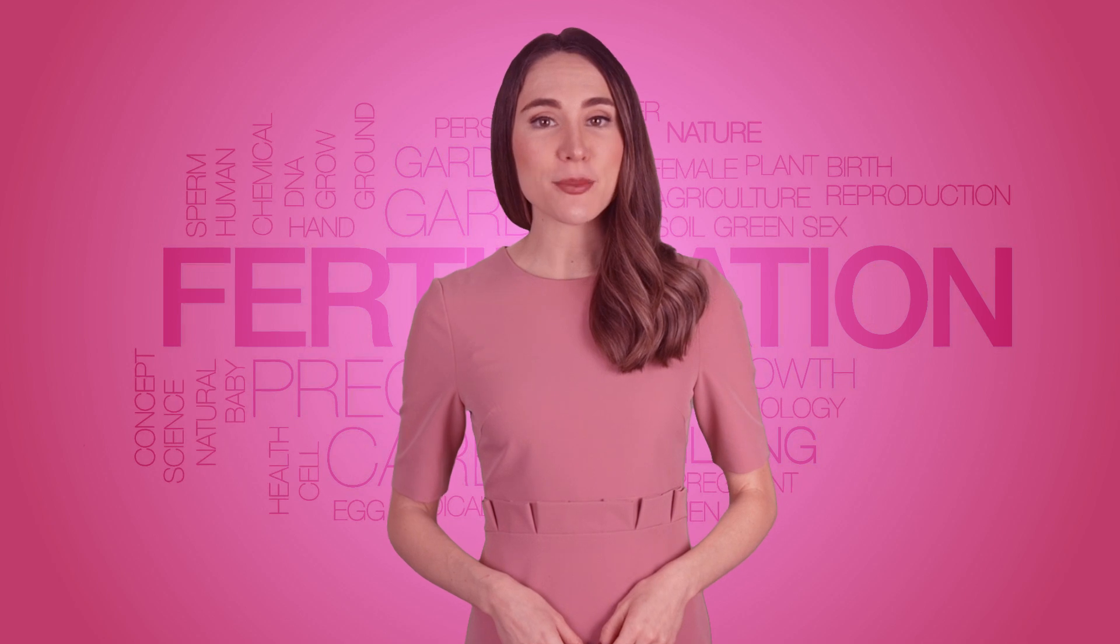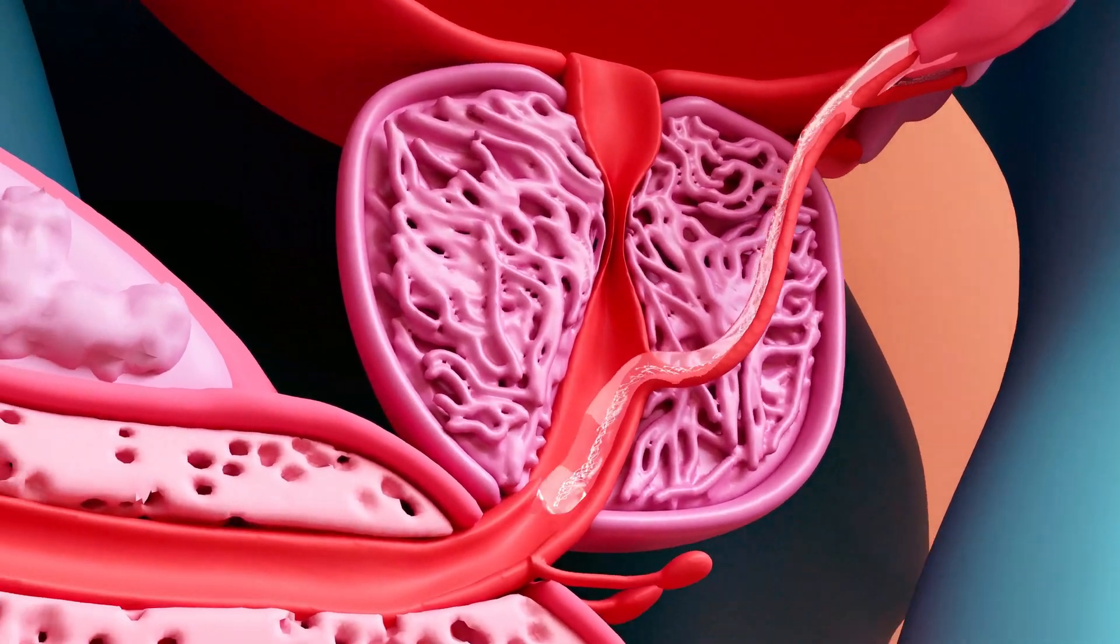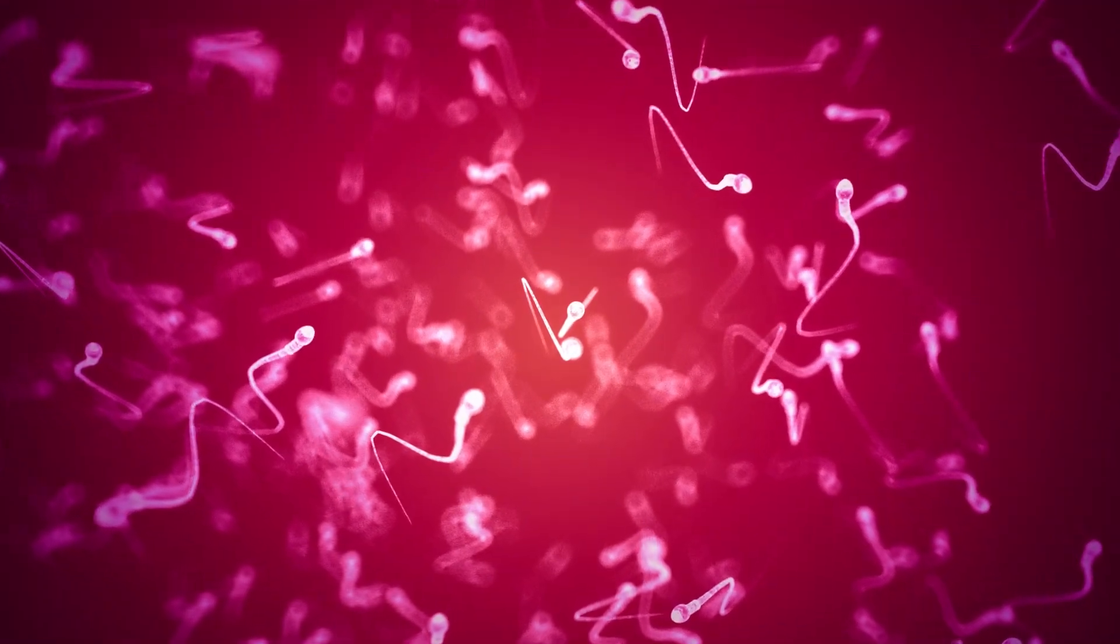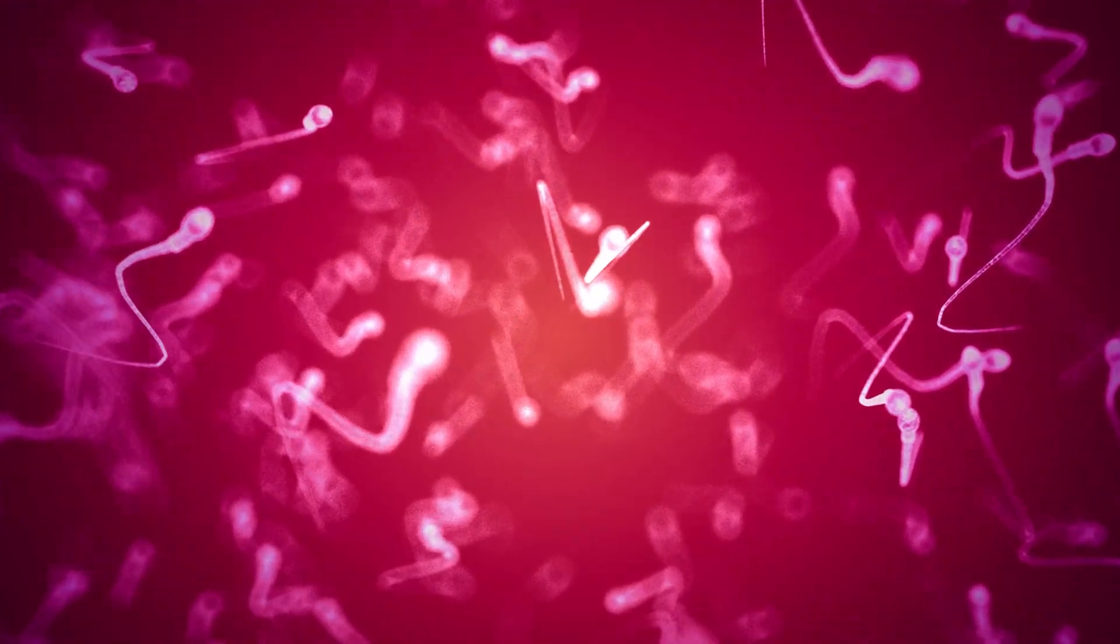During sexual intercourse, approximately 300 million sperm enter the vagina. However, shortly afterward, the majority of them must either flow out or perish due to the acidic environment. Nevertheless, many sperm survive due to the protective elements present in the surrounding fluid.